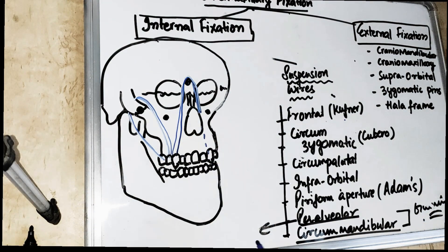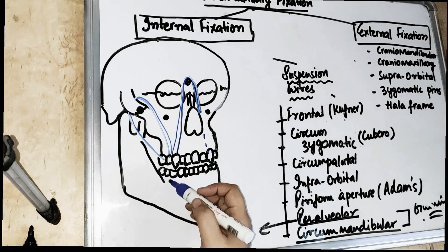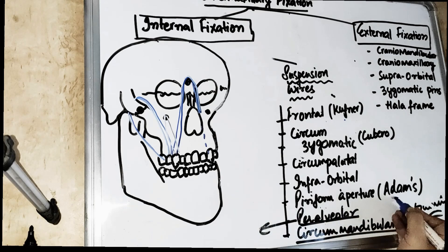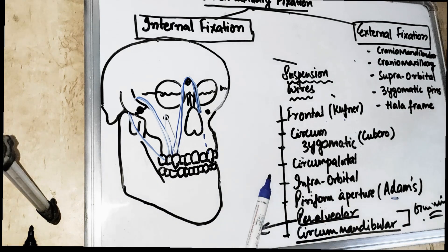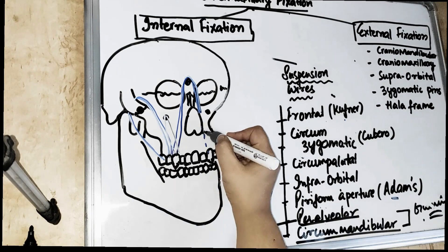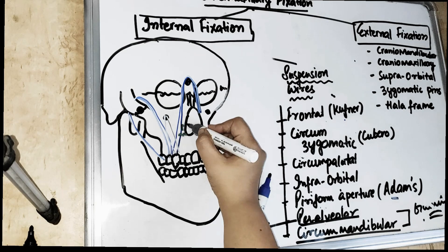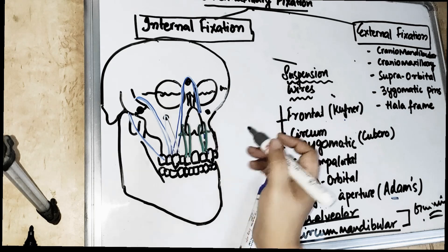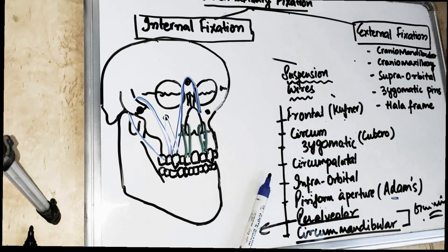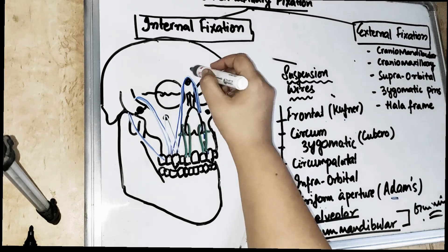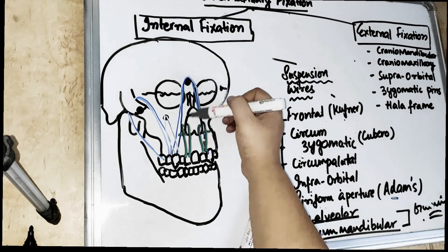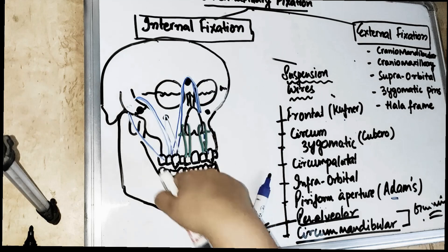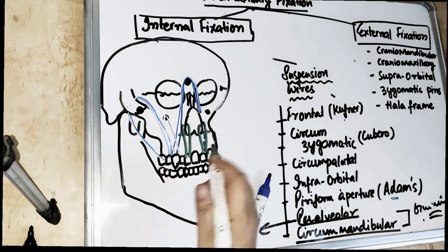For the frontal suspension (Kufner approach), a screw is placed in the frontal region and the wire is suspended around it. For circumzygomatic (Kubero approach), the wire goes from the posterior teeth around the zygomatic arch. Circumpalatal and infraorbital follow similar principles. The piriform aperture approach (Adams) is used for Le Fort 1 fractures, engaging the wire above the fracture line. For circumzygomatic, the zygomatic arch itself acts as the anchor. Suspension wires are removed after 6 weeks.